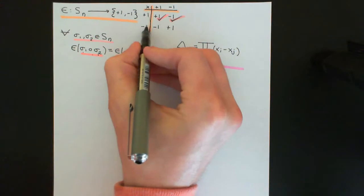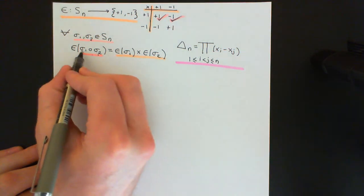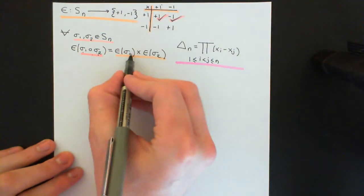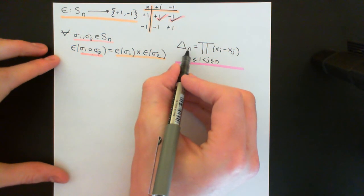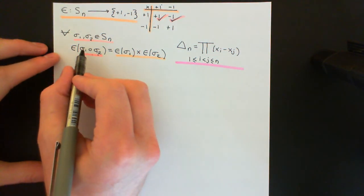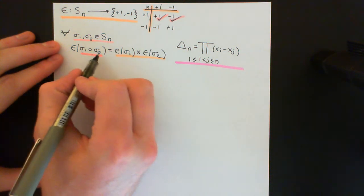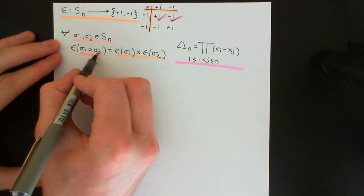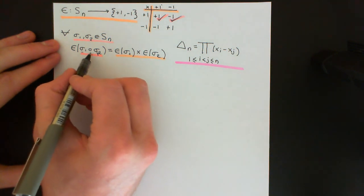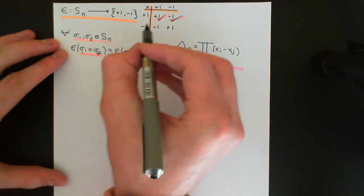Case 3: sigma 1 is odd and sigma 2 is even. We want to prove that odd composed with even gives an odd permutation, since negative 1 times plus 1 equals negative 1. First do sigma 2 — the even one — which flips an even number of terms. Then do sigma 1 — the odd one — which flips an odd number. Adding odd to even gives odd. Again, any cancellations just subtract 2, which doesn't change the parity. So the result is odd. Case 3 is verified.